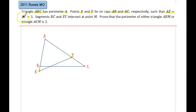Such that AX is equal to AY, which is equal to 1. Those distances are equal, so we know this distance here AX is equal to this segment here, so you have an isosceles triangle there. Segments BC and XY clearly intersect at this point M. Let's call it M, that intersection point. Prove that the perimeter of either triangle ABM or triangle ACM is actually 2.